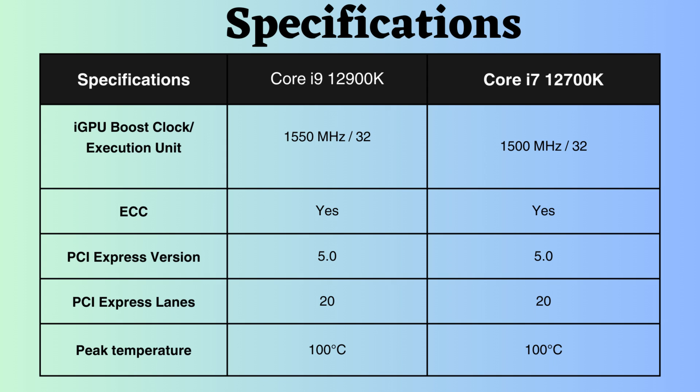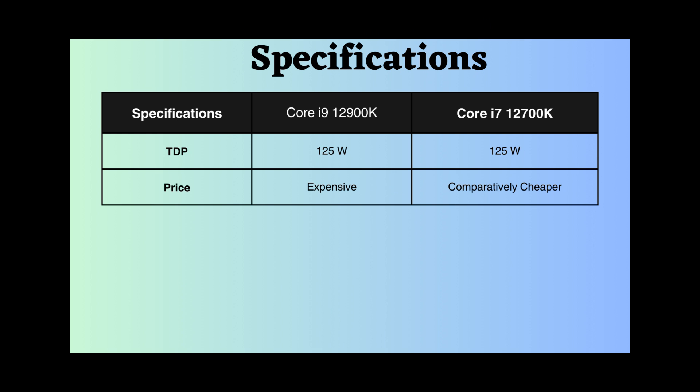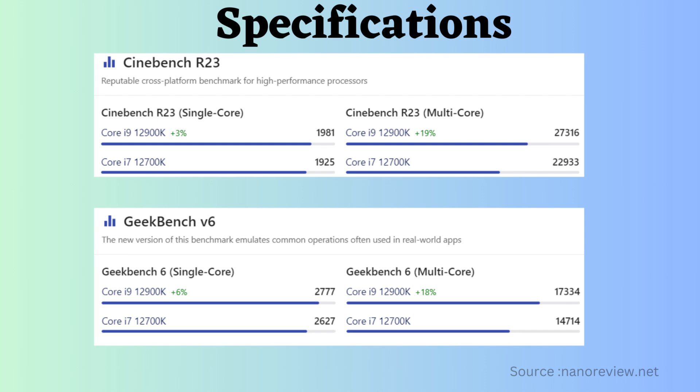Both processors can withstand temperatures up to 100 degrees Celsius, and their thermal design power (TDP) is 125 watts. In terms of pricing, the Core i9-12900K is higher than that of the Core i7-12700K.